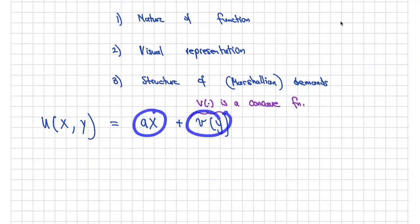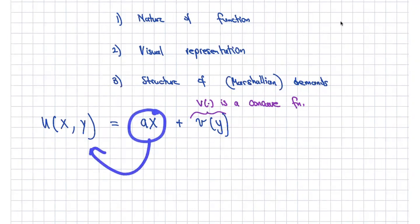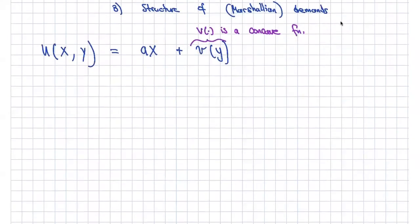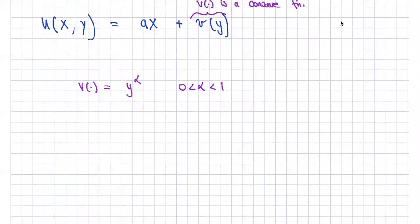It's quasi-linear because it looks almost linear. It's really telling us that the utility contribution of x is independent of y and vice versa. Because v is concave, its slope — the marginal utility — is decreasing. A potential form for v would be y to the power of alpha, where alpha is between 0 and 1.